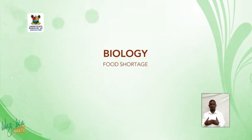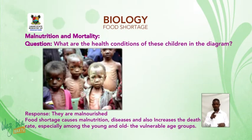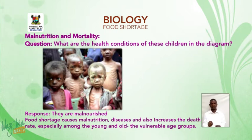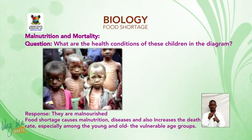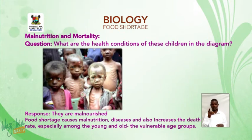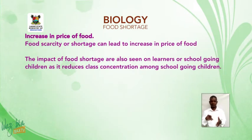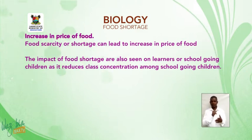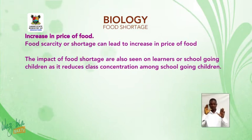Welcome back. Still on effects of food shortage on population size. 4. Malnutrition and mortality. Food shortage causes malnutrition, diseases, and also increases death rates, especially among the young and the old — the vulnerable age groups. 5. Increase in price of food. Food scarcity or shortage can lead to an increase in the price of food. The impacts of food shortage are also seen on learners, as it reduces class concentration among school-going children.